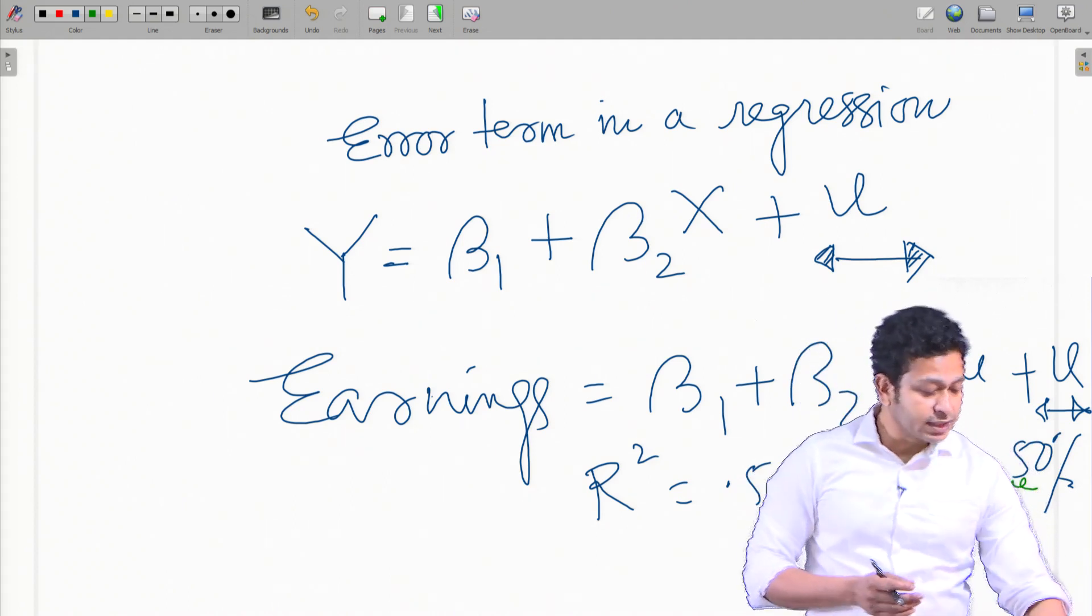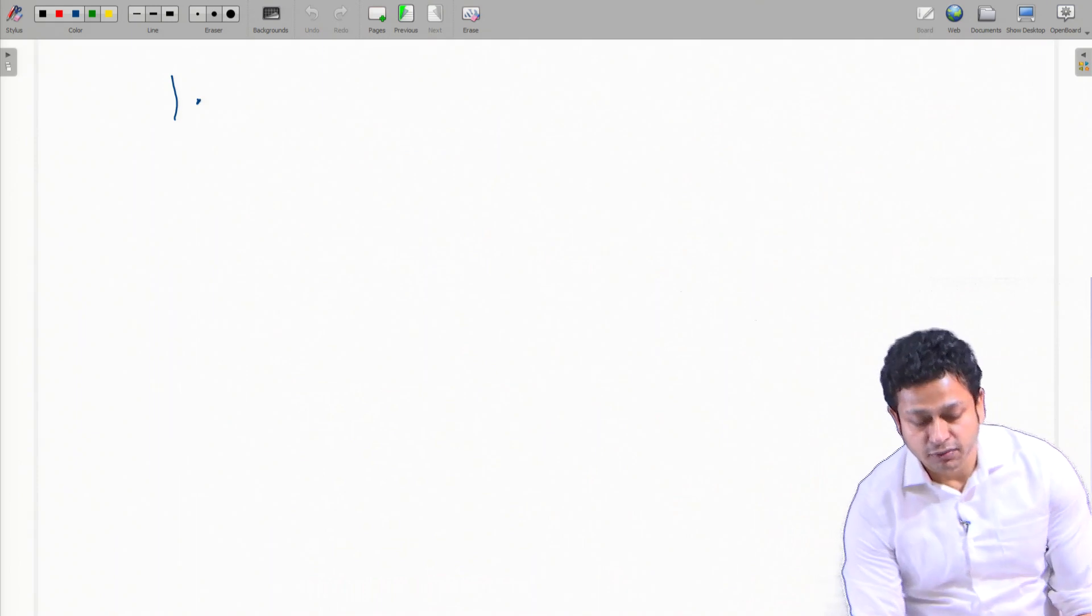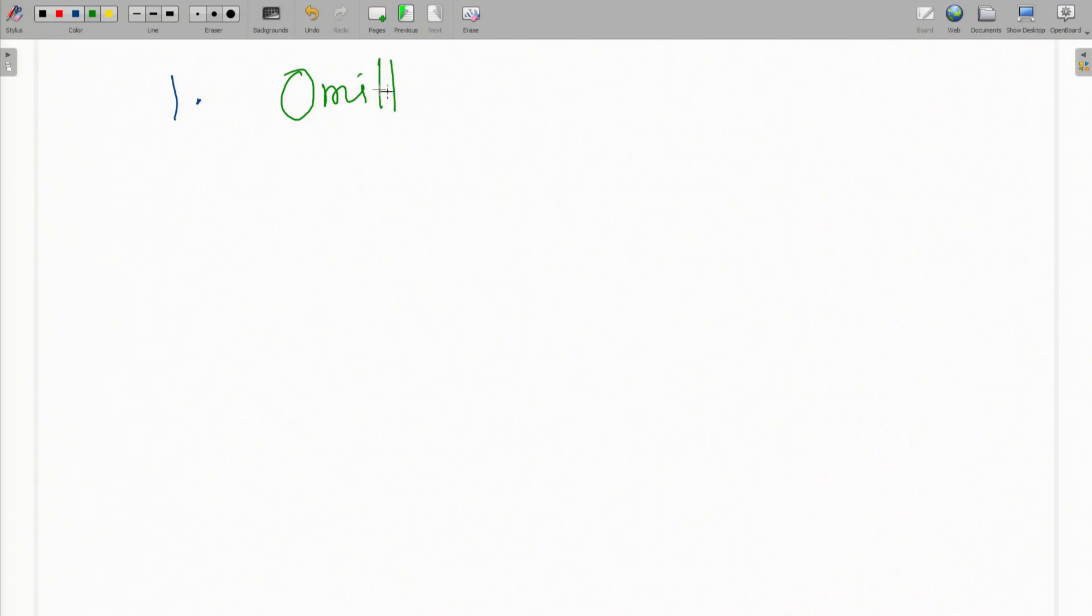So these variables which we cannot account for are called the problem of omitted variables. Omitted variables is a problem when we actually omit relevant variables.